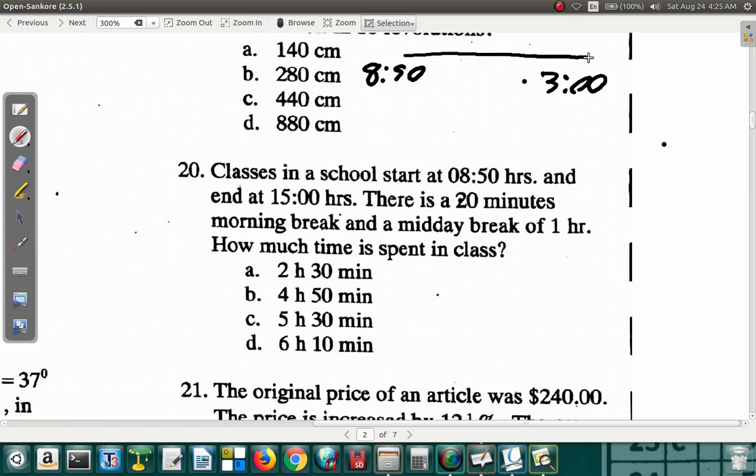Total time. From 8:50 to 3. Let's start counting from 9 o'clock for the total time. 9 to 3. 9, 10, 11, 12, 1, 2, 3. That's 6 hours. Then you add on the 10 minutes. So, you have 6 hours, 10 minutes total. Time is 6 hours and 10 minutes.